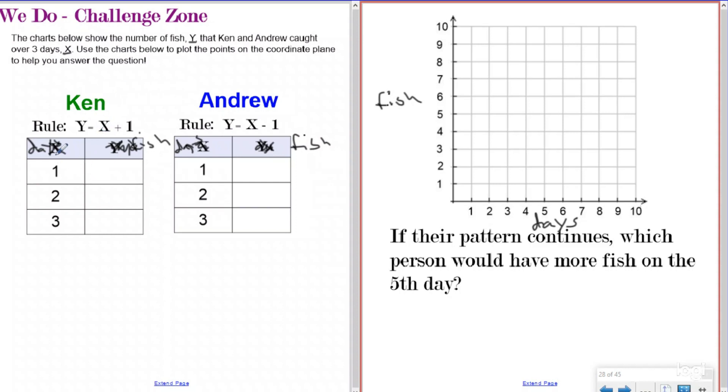So for Ken, we know that our X is our days and our Y is our fish. And we're following the rule X plus one equals Y. So on the first day, if I plug in one for X, one plus one is two. So on the first day, Ken caught two fish.